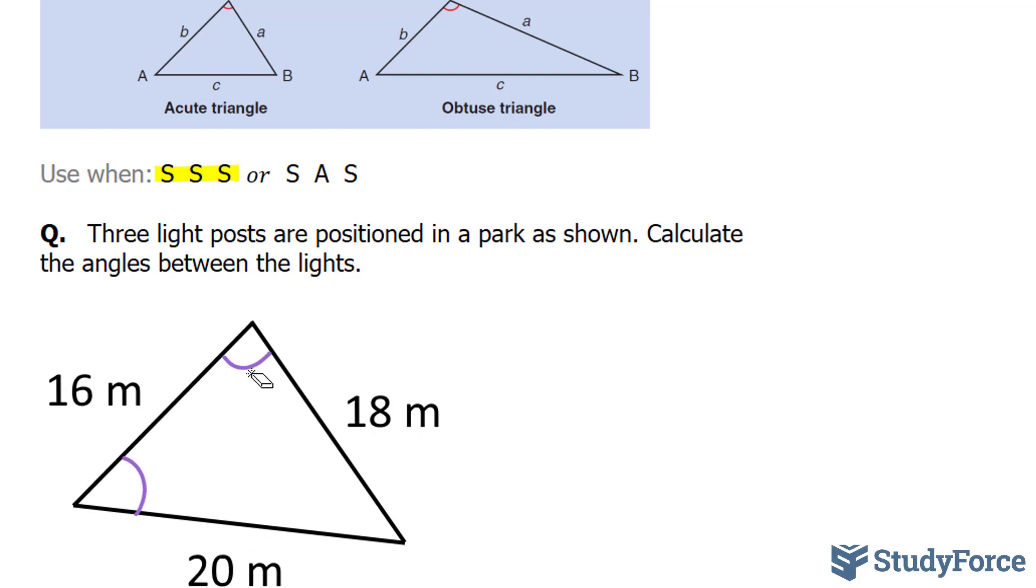So we'll start off by labeling this triangle. Notice that it's very plain. I'm going to call this A, B, and C. And I'll start off with angle A. I'll try to look for angle A.